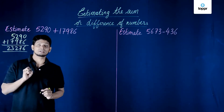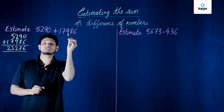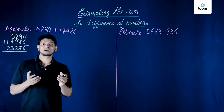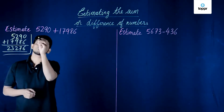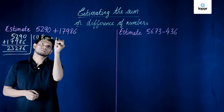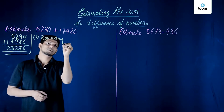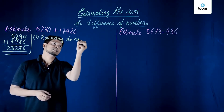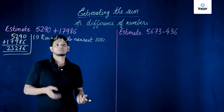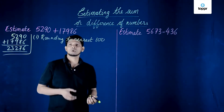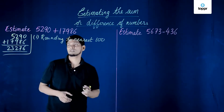But here, when we say estimate, we will be rounding off individual numbers so that the addition is quite easier. We can round off individual numbers to the nearest hundred, or we can round off to the nearest thousand.